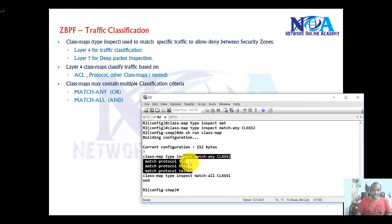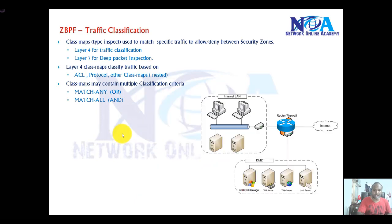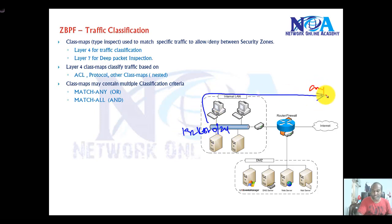We can either match the protocol, or take another example: say you want to match traffic coming from the LAN, specifically from the 192.168.1.0 network, going to any destination, and only if it is HTTP — maybe for other traffic you want to deny.